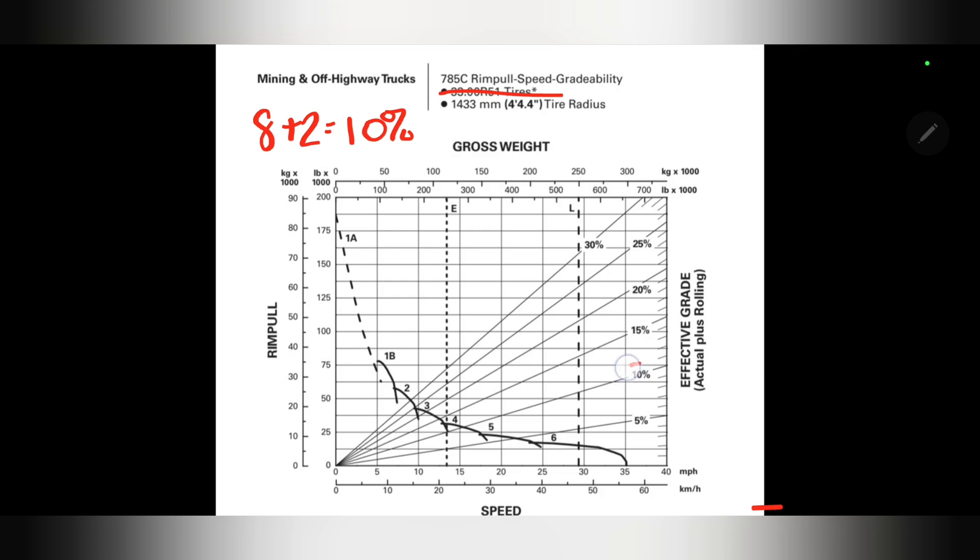And we can see here. And we know that our truck is loaded. So from the loaded line, we follow it down until we hit the 10% effective grade line. From there, we travel across horizontally until we hit the RIMPLE curve.